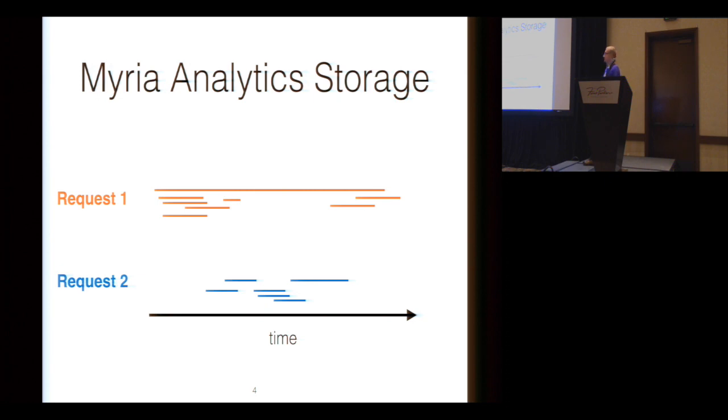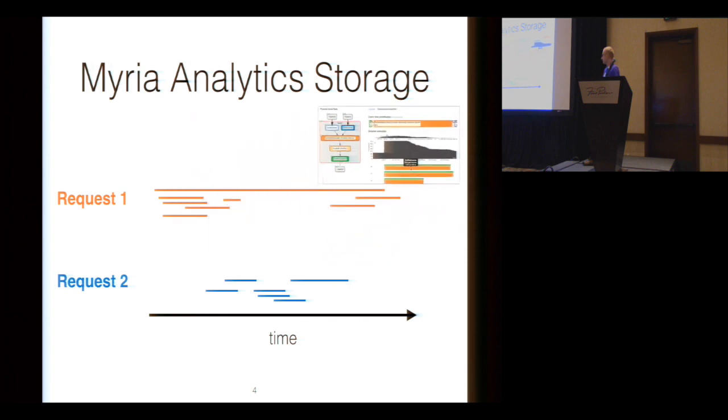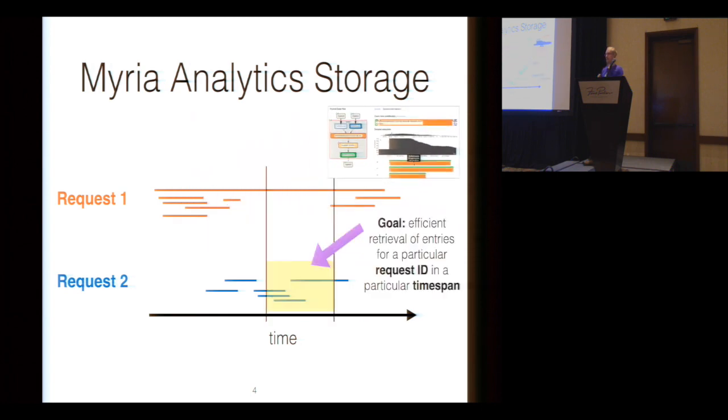There are data structures in this distributed database system called Myria. It handles client queries and logs its own internal operations describing what is happening in the database. This analytics data powers a visualizer that shows the important operations taking place at any given time and shows you a breakdown to help debug performance. In order to make this visualizer work at interactive speeds, Myria needs to be able to quickly find the data structures associated with a particular request and fall within a particular time span.